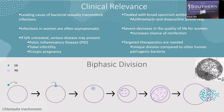So first, why is chlamydia clinically relevant? It's the leading cause of sexually transmitted bacterial infections. What's even more concerning is that infections in women are often asymptomatic. If these infections go untreated, serious reproductive consequences such as pelvic inflammatory disease, tubal infertility, or ectopic pregnancies can develop.